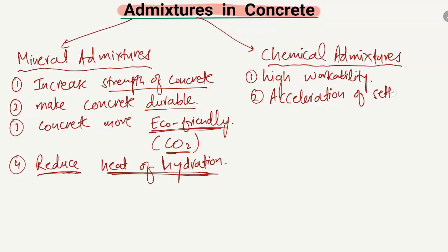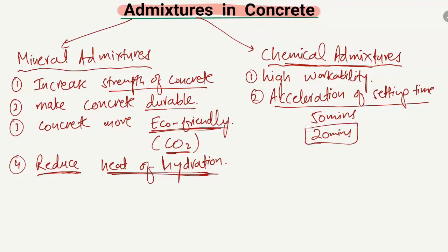When we pour concrete into a structural member, sometimes we need early high strength. So we add chemical admixtures to accelerate the setting time. For example, if the setting time before was 50 minutes, by adding chemical admixtures it can be reduced to 20 minutes, so we get our strength earlier.